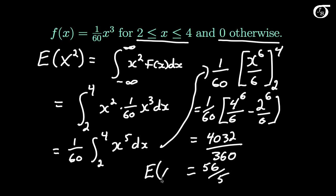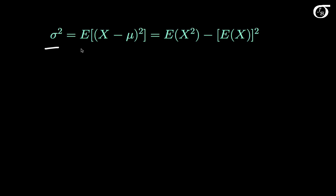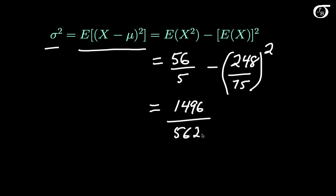Recall that what we just found was the expectation of the square of x. Now let's go ahead and find the variance. The variance, which equals the expectation of x minus mu squared, is also equal to the expectation of x squared minus the expectation of x all squared. We just found that the expectation of x squared is 56 over 5, and previously we found that the expectation of x is 248 over 75. Squaring that and subtracting gives us 1496 over 5625, which is approximately 0.266. And that's how we go about deriving the mean and variance of any continuous probability distribution.